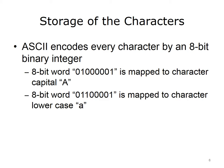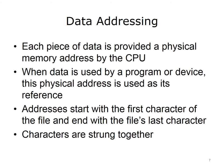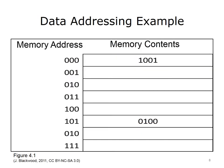Each keyboard character is assigned its own distinct 8-bit word by ASCII. An operating system can locate data that is stored in primary or secondary storage. When data is stored in primary or secondary storage, each piece of data is provided a physical memory address by the CPU. Whenever data is subsequently used by a program — for example, to open or save a file — or device — for example, a print request from the user — then this physical address is used as its reference. File addresses start with the first character of the file and end with the file's last character. Characters in the file are strung together like railroad cars that make up a train, where each car knows its head and its tail. The physical address is represented in hexadecimal, which allows the address to be represented in fewer digits than in binary. However, a full discussion of hexadecimal representation is beyond the scope of this lecture.